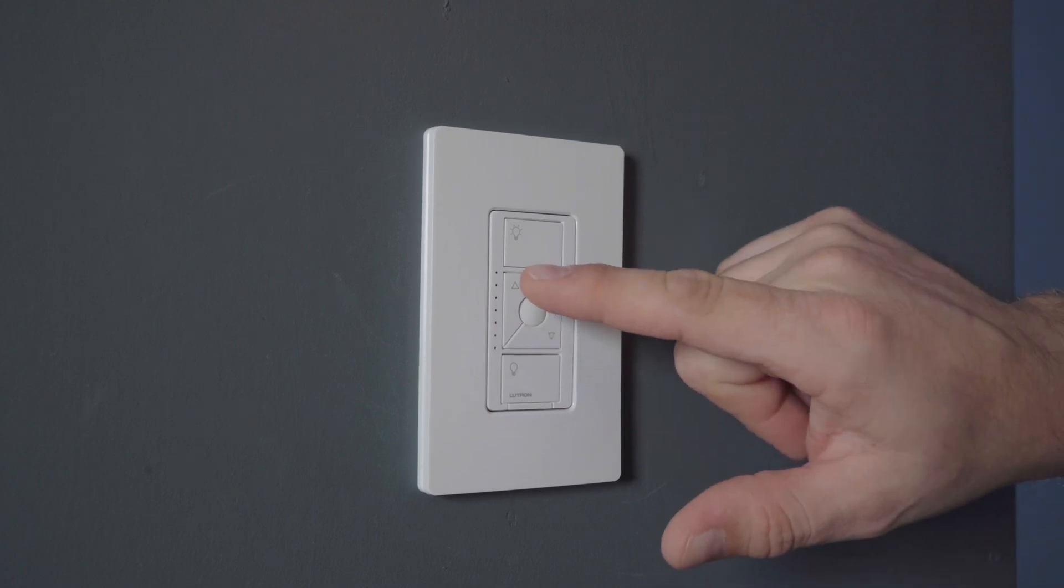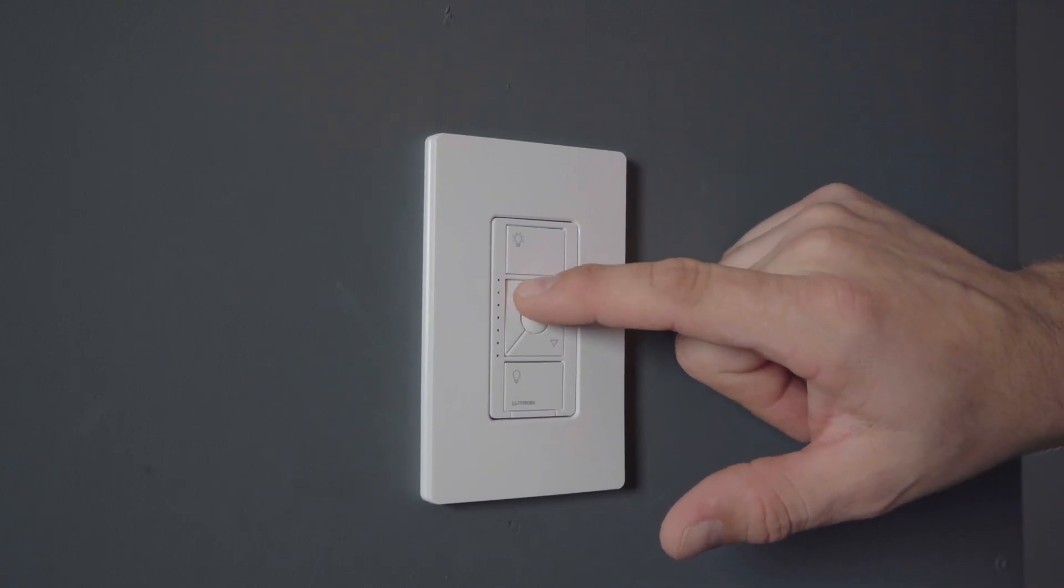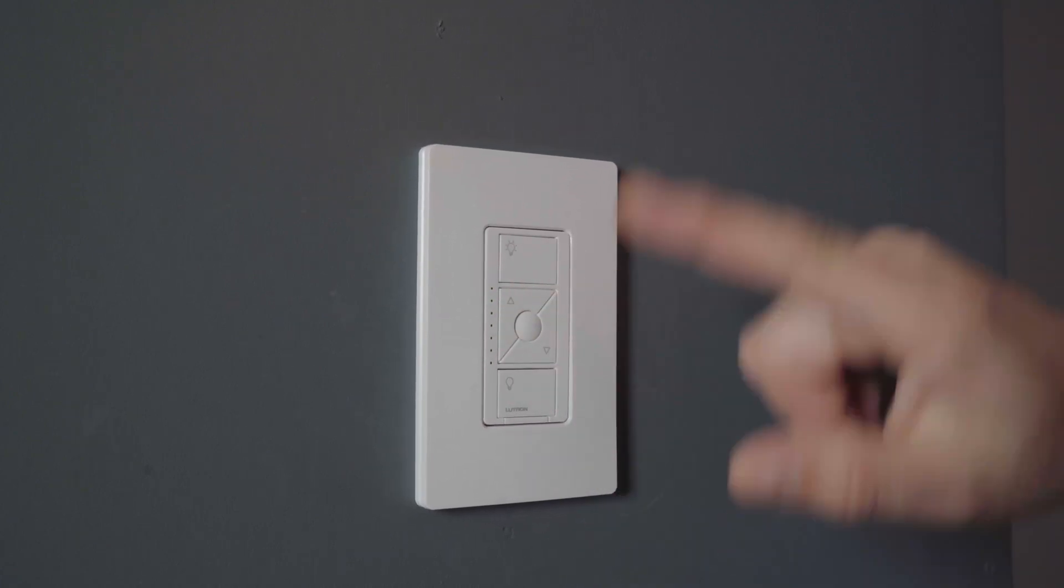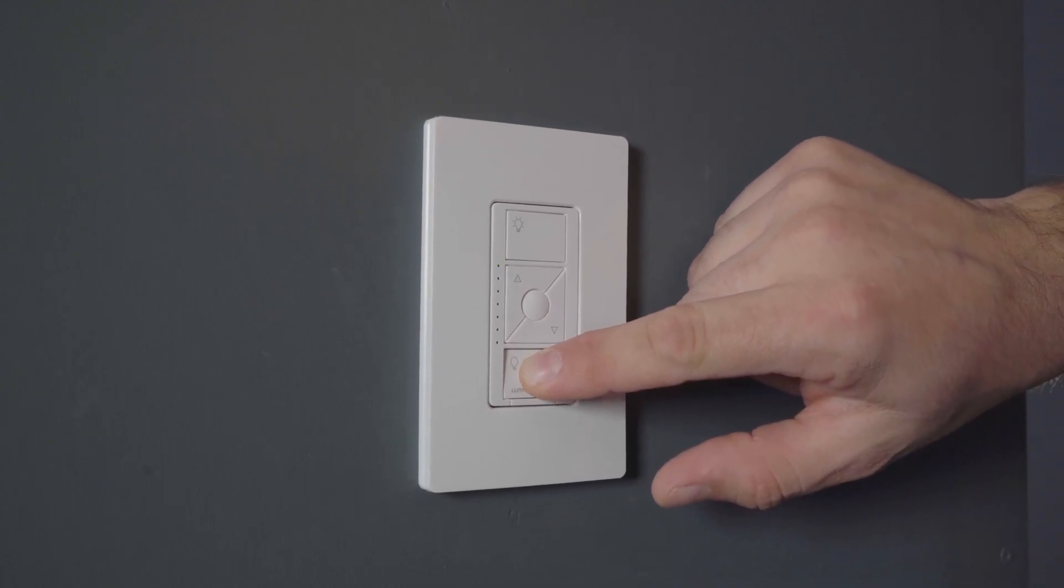Now the light is flashing. You can adjust the upper level trim with the brighter and the darker buttons. When you get it to a level that you like, press and hold the off button until the light turns solid.